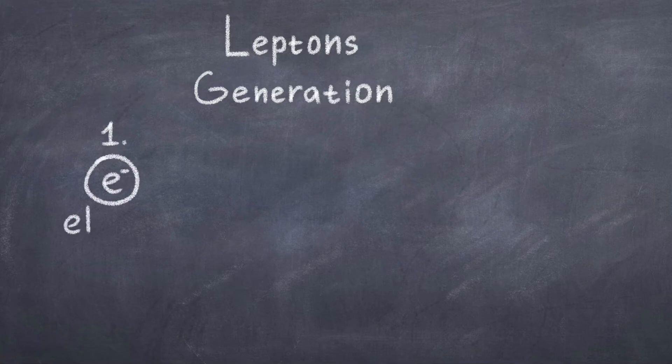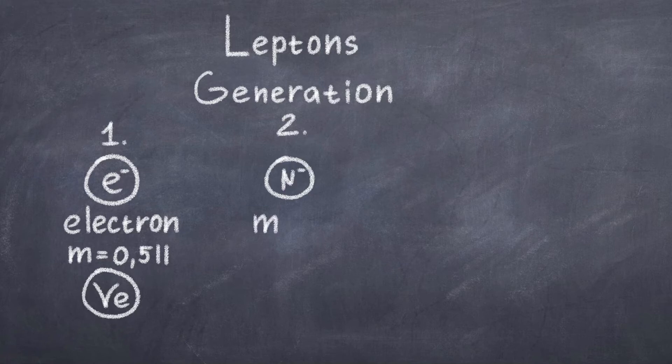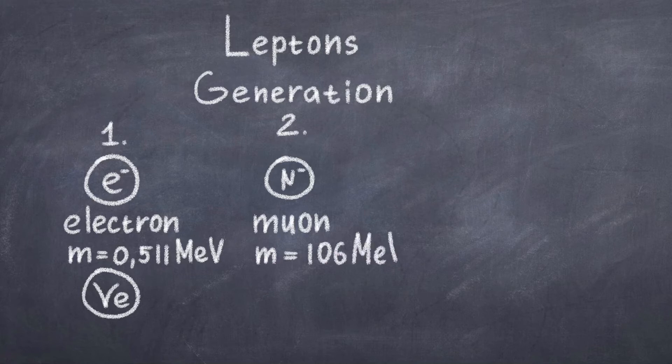In the standard model, we have what we call three generations of fermions. This is because we see that many particles are similar in their properties, but their mass is different. If we look at the first generation, we have the electron and the electron neutrino. The electron we know from the atom and the electrons themselves are fundamental particles. Electrons have a negative charge and they are rather light weight, weighing around 0.511 megaelectron volt. The electron is part of the first generation of fermions.